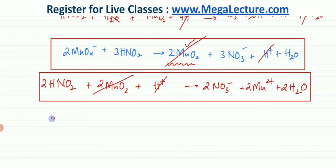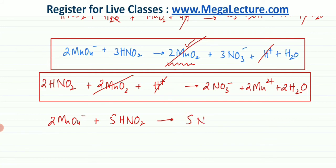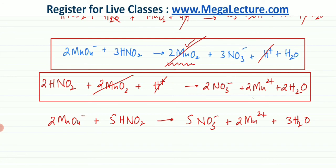Adding everything up: on the left side there are 2MnO4⁻ and 5HNO2 molecules, and on the right side there are 5NO3⁻ ions, 2Mn2⁺, and 3 water molecules. Checking: 5NO3⁻, 2Mn2⁺, 3H₂O on the right, and 2MnO4⁻ with 5H₂O on the left — so that's basically your final overall equation for the reaction.